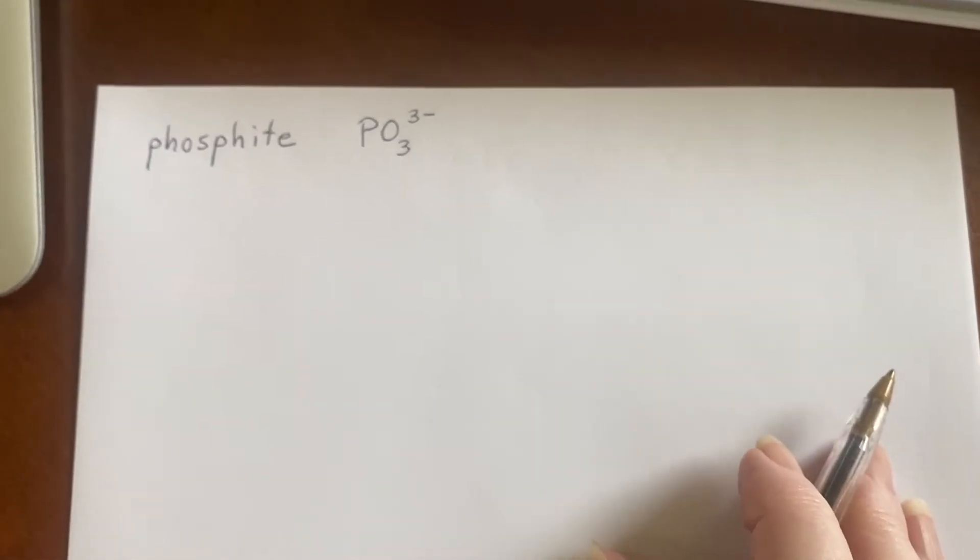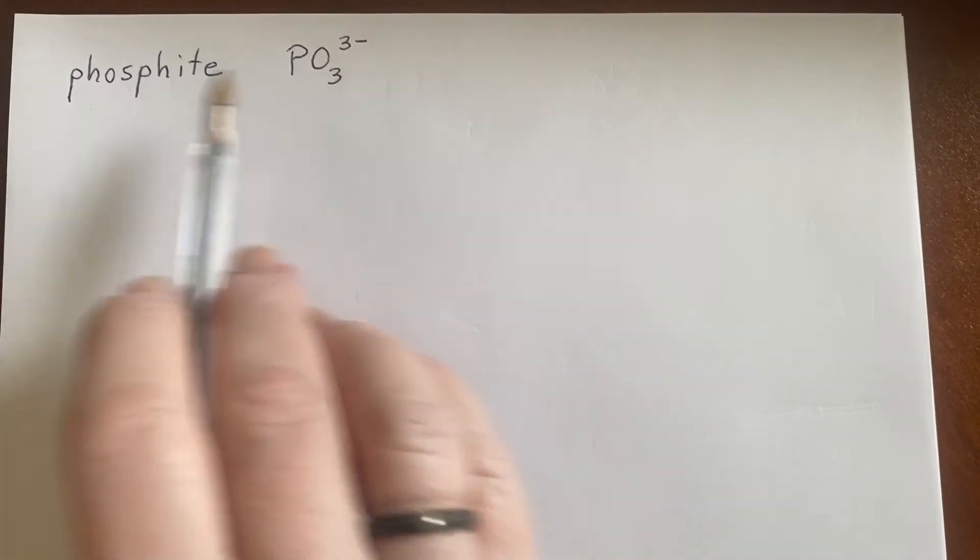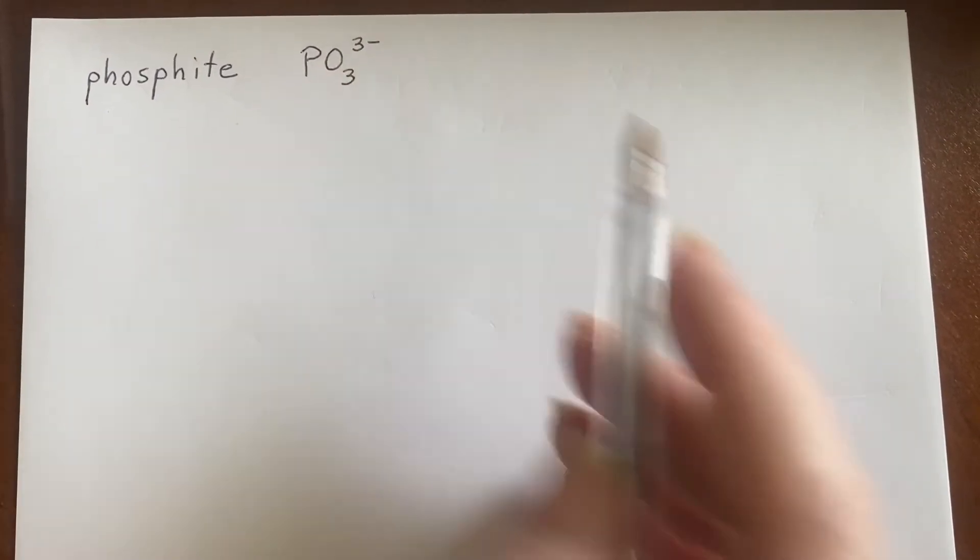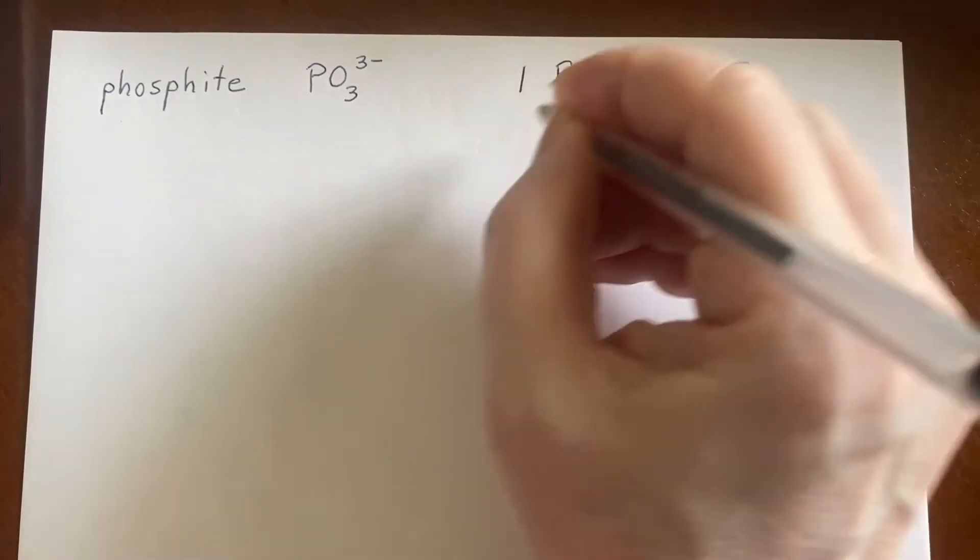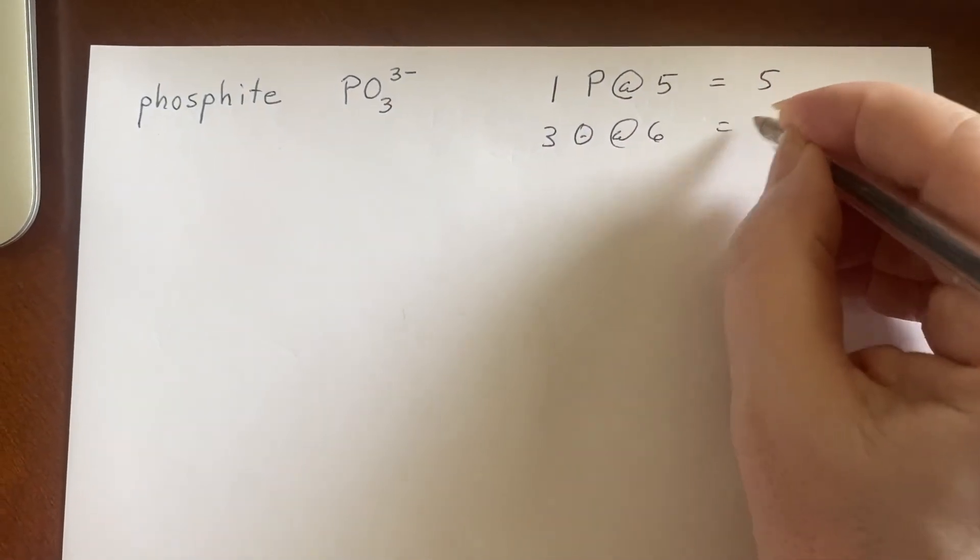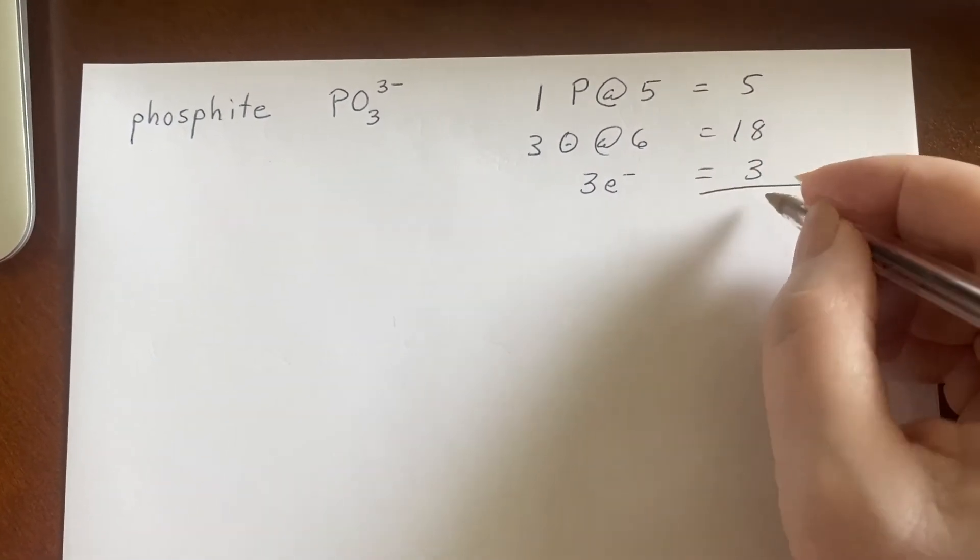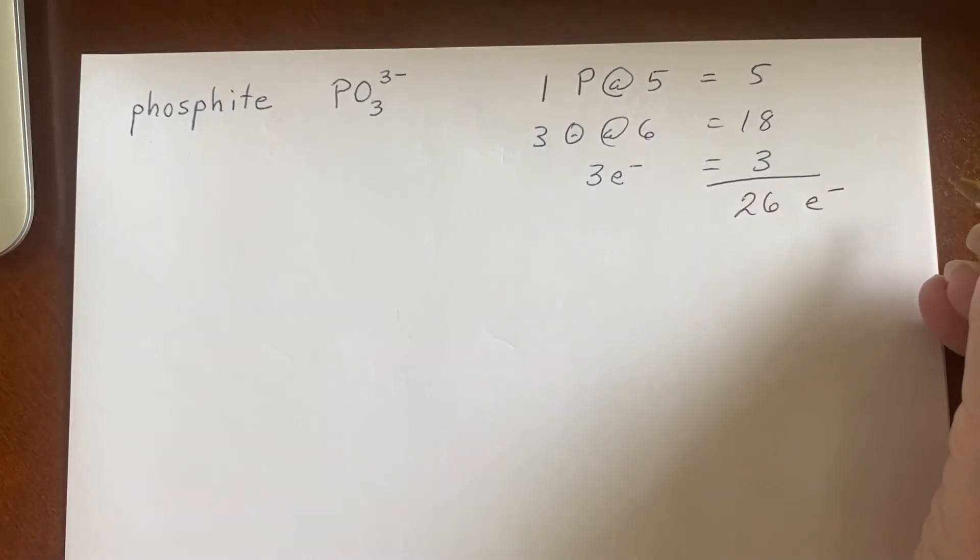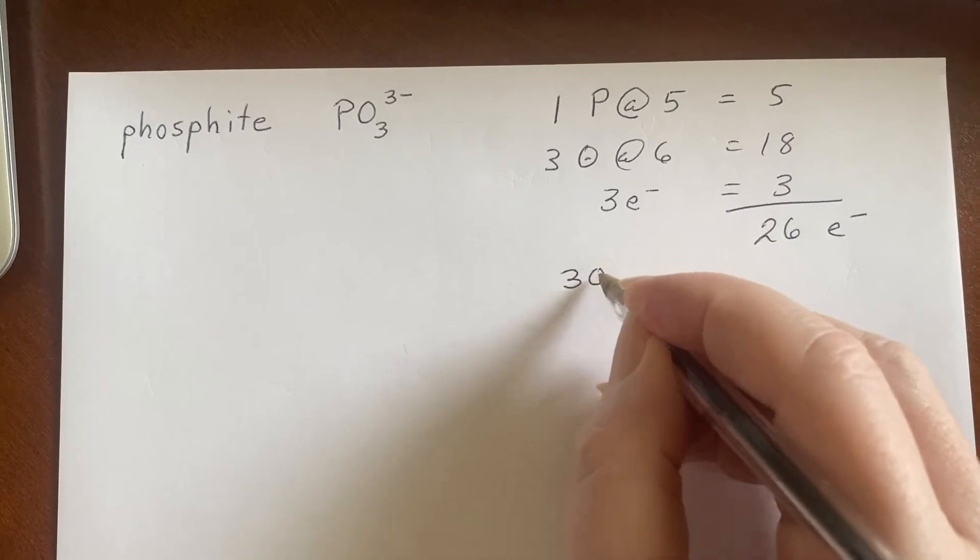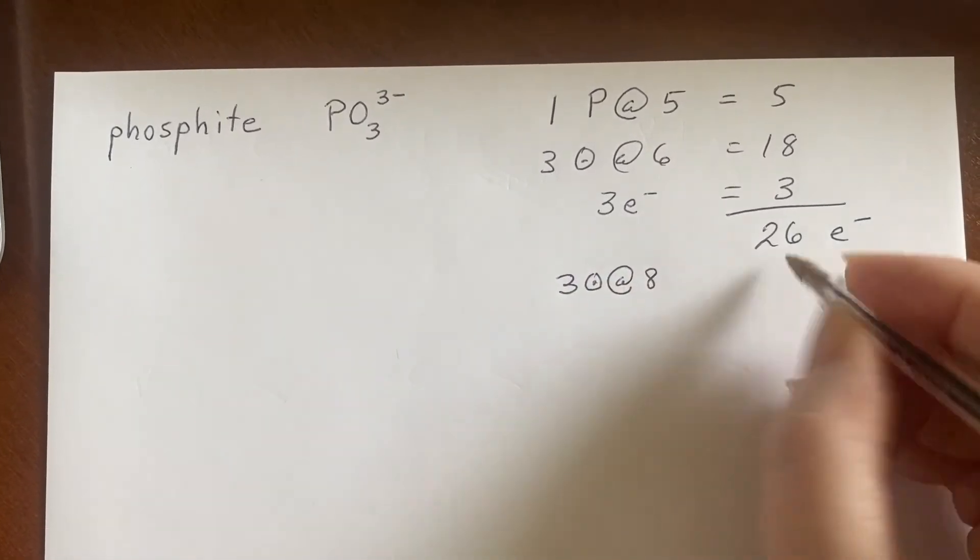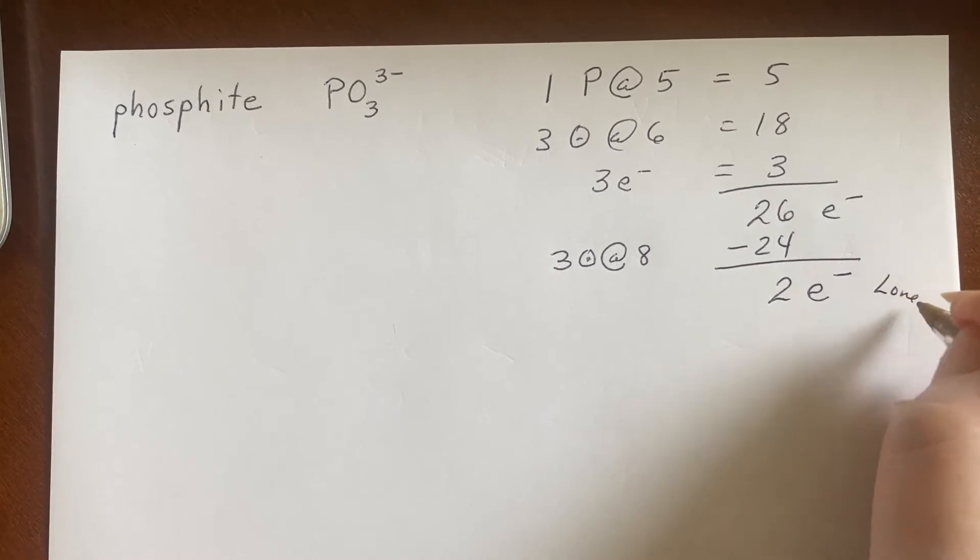So I always get a lot of questions on Lewis structures for these polyatomic ions in particular. So let's just do a couple. Phosphate, PO3^3-. So we say, there's a phosphorus, it's going to bring in five electrons. There's three oxygens, each bringing in six electrons. And there's an overall negative charge of minus three. So that's three more electrons. This brings us to a grand total of 26 electrons that we need to place. Now, the oxygen is the more electronegative. So it's going to come to the buffet table first and grab its eight. So that's 24 gone. That leaves you with two electrons left over.